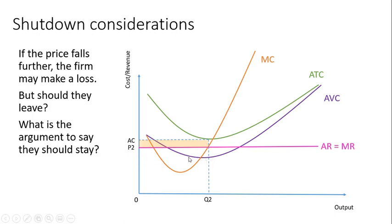You're making positive contribution: your price exceeds your variable costs, which means that in the short run where fixed costs are already paid, if you've paid your fixed costs you might as well keep going. As long as you're making enough to cover the variable cost of production, keep on with it. Just because you're going to make a loss, you might as well make as much as you can to minimize that loss.